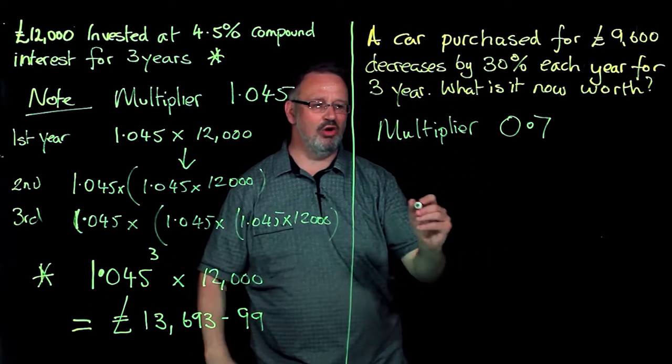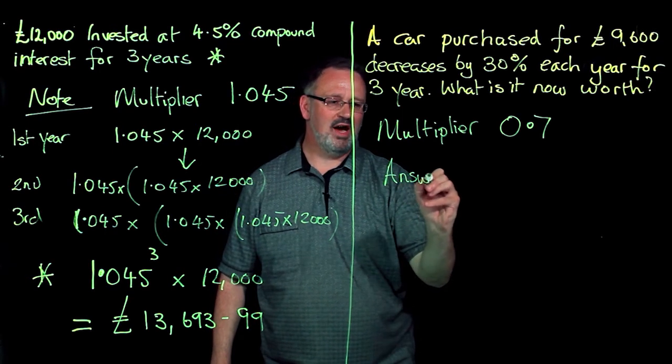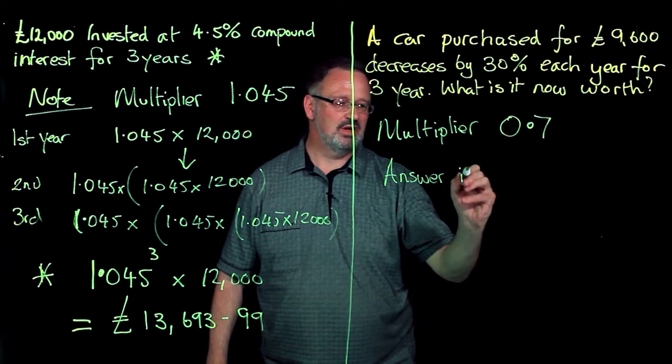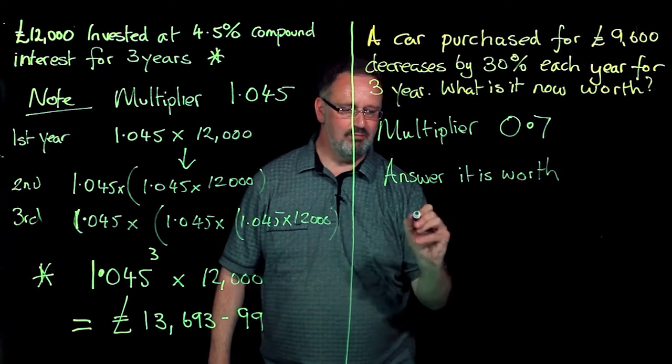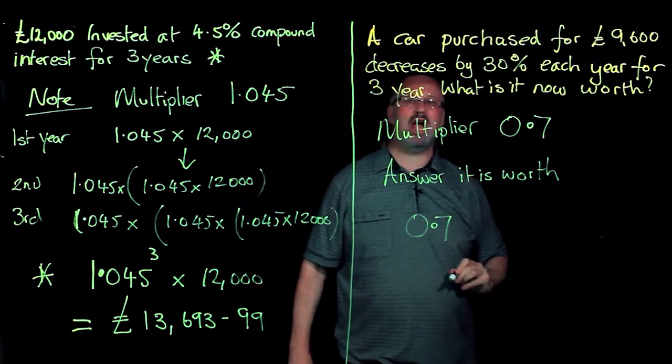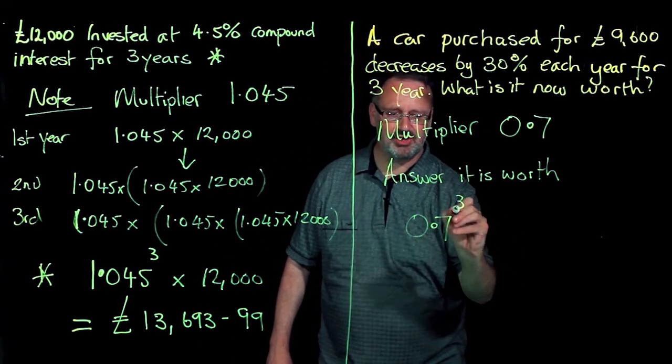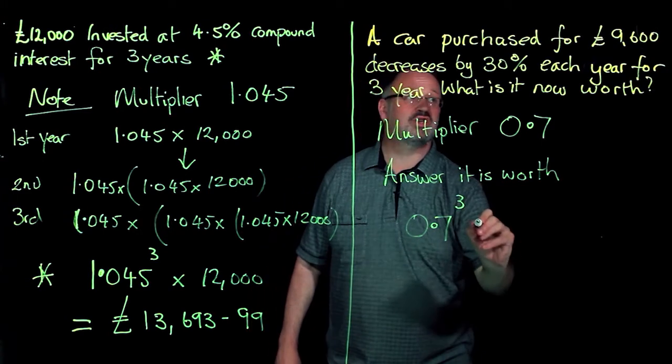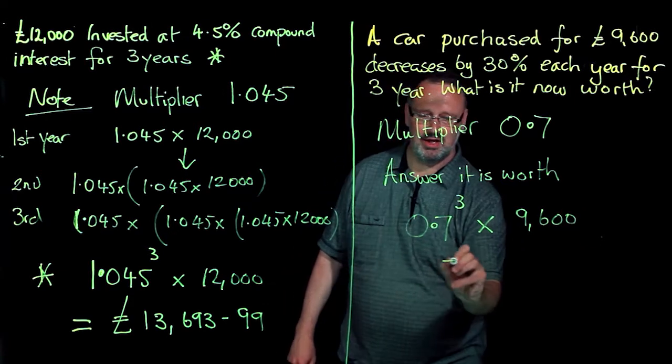And similarly now, the answer of how much it is worth is going to be my multiplier to the power of the number of years. Just read the question again, 3 years, 0.7 to the power of 3 times 9,600 and equals.